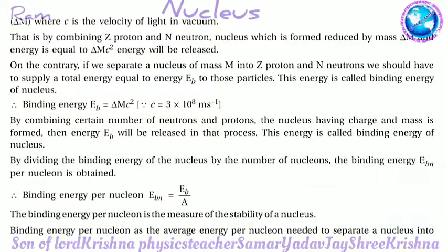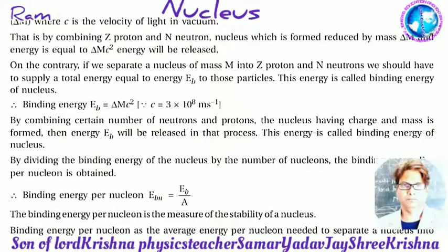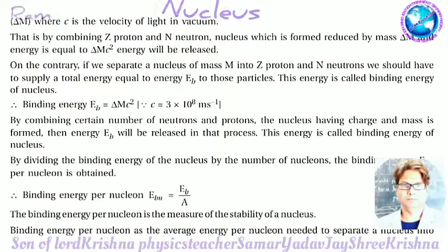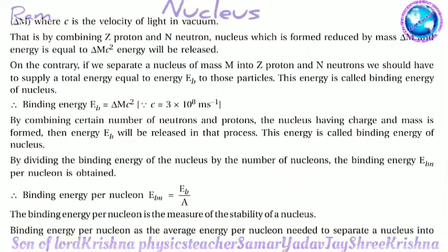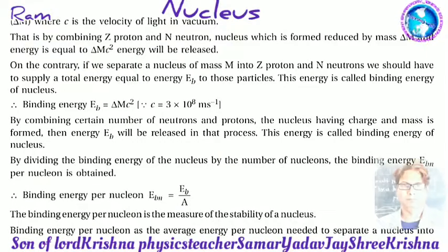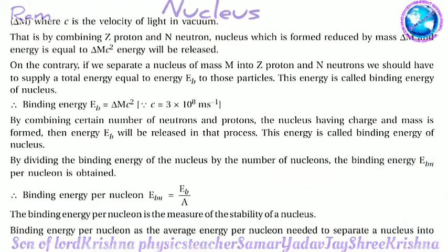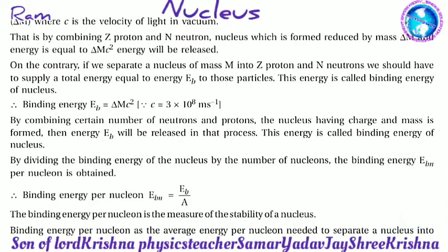By combining a certain number of neutrons and protons, a nucleus with charge and mass is formed, and energy Eb is released in that process — this is called the binding energy of the nucleus. By dividing the binding energy by the number of nucleons, the binding energy per nucleon Ebn is obtained: Ebn = Eb / A.